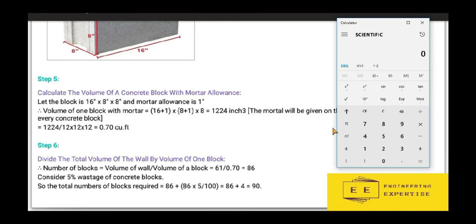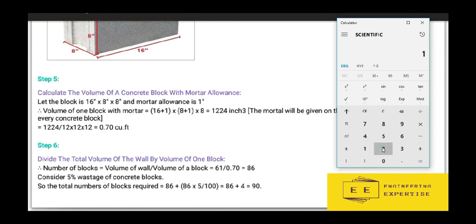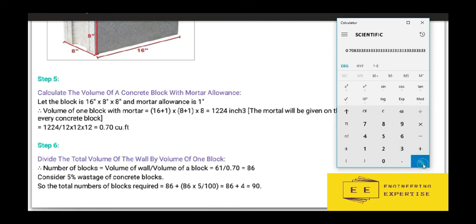To convert from cubic inches to cubic feet, we divide 1224 by 12³ (1728). On the calculator: 1224 ÷ 1728 gives us a volume in cubic feet of 0.70 cubic feet for one concrete block.